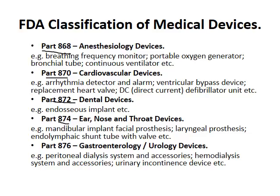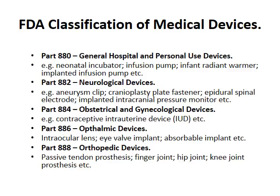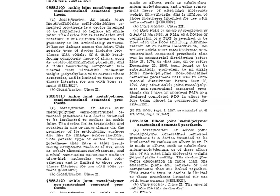The device categories include things like anesthesiology devices — for example, breathing frequency monitors and portable oxygen generators. You look through the sub-chapters, get to your device description, and find what best describes your device.